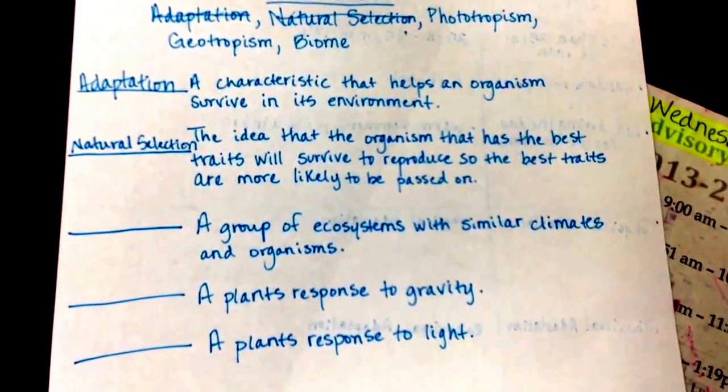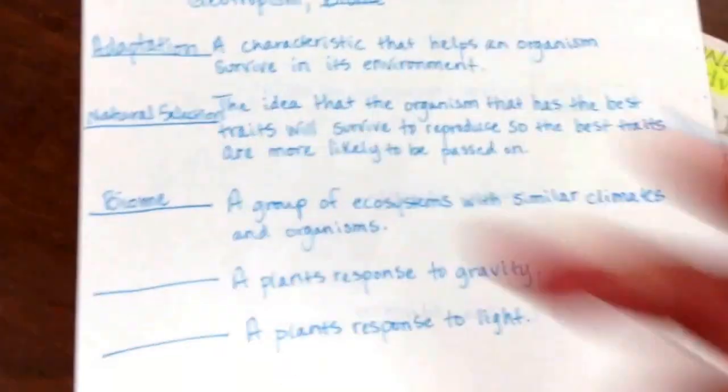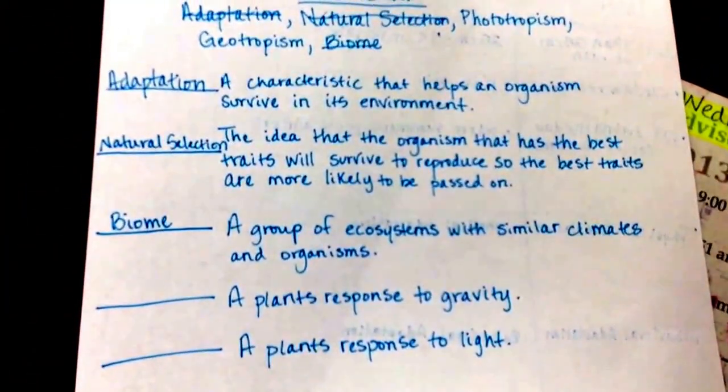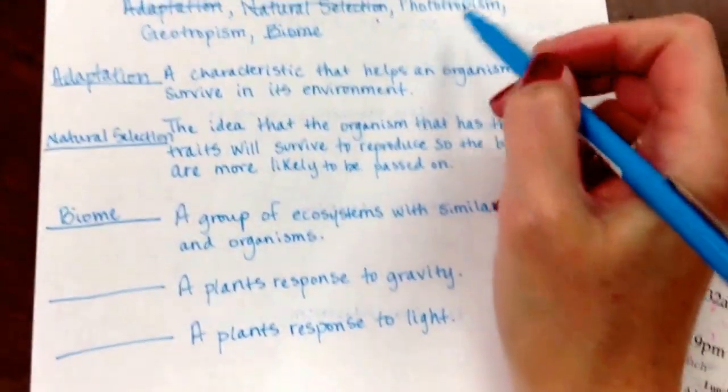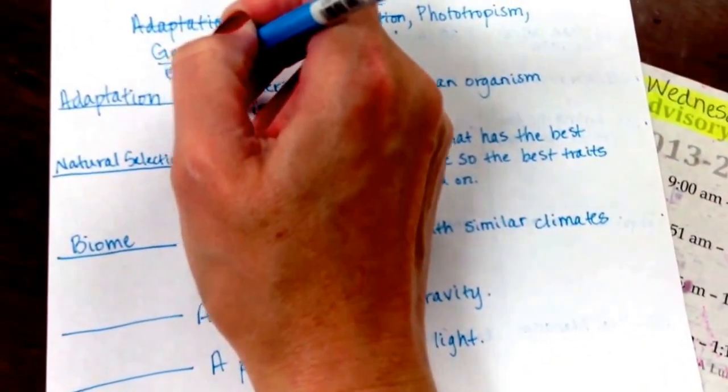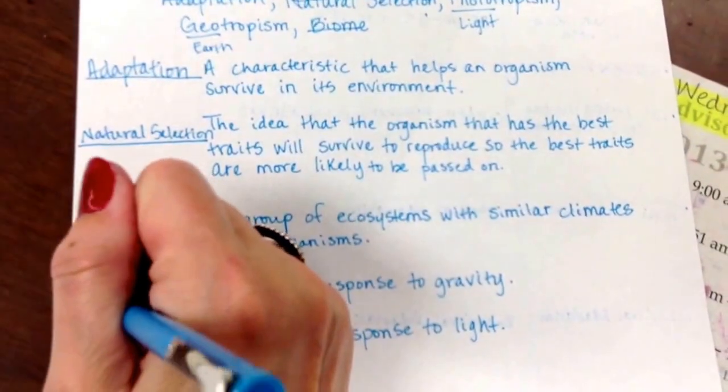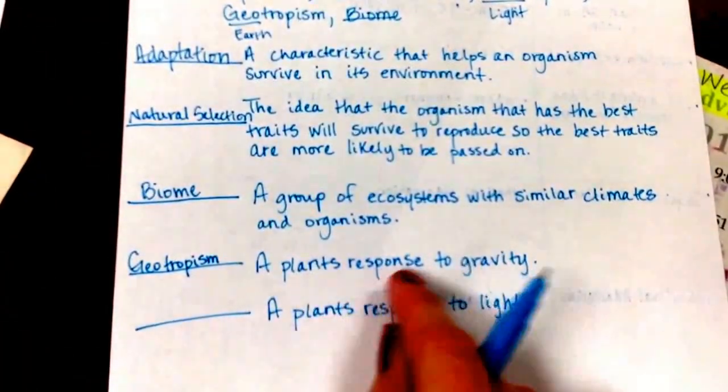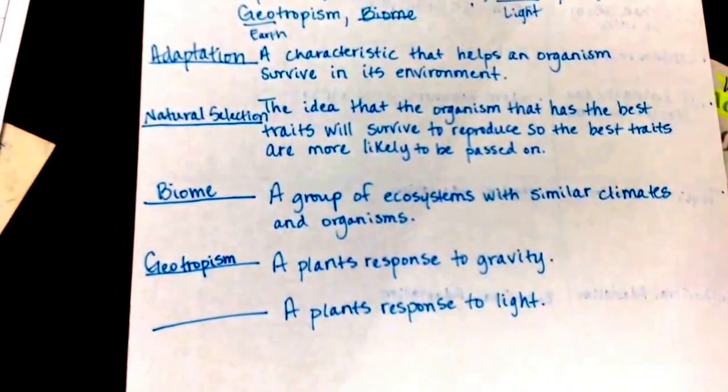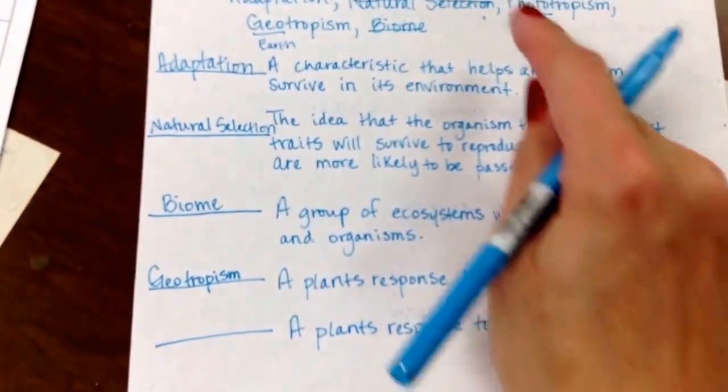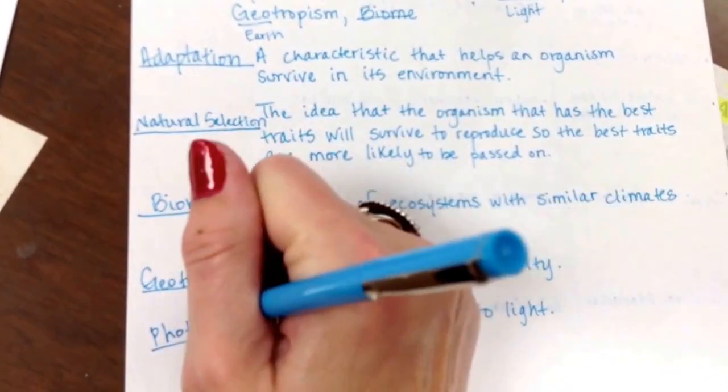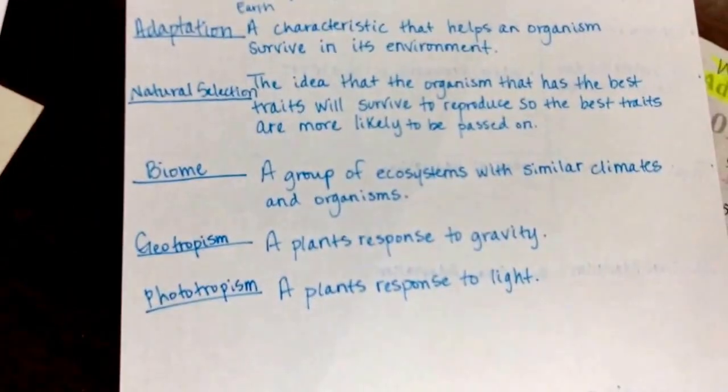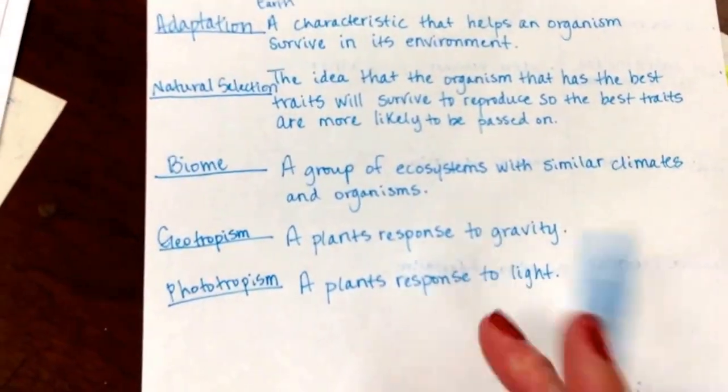So the ones that are reproducing and passing on the trait were the ones with the longer ears. And so that continues to be the trait that helps them survive longer in that environment and it keeps getting passed on from generation to generation. A group of ecosystems with similar climates and organisms. That is actually the definition for biome. So far we've studied two biomes: the desert and the grassland biome. Next you have a plant's response to gravity. We have phototropism and geotropism. I'm hoping that you remember geo means earth and photo means light. So a plant's response to gravity would be geotropism.